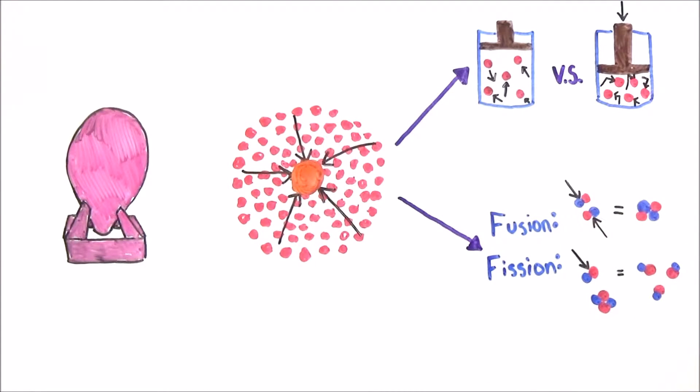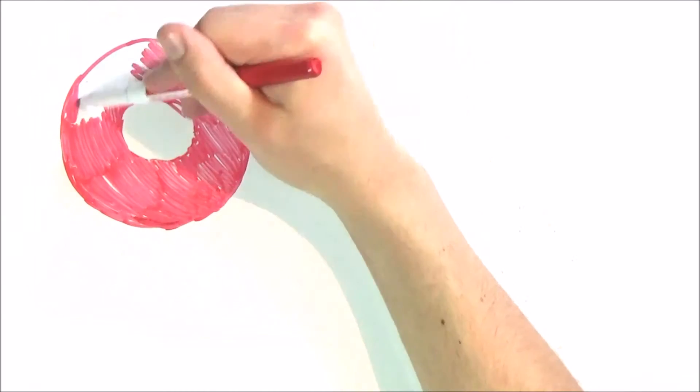By the way, fusion in stars is thought to be the way we got all the other elements. Both fission and fusion take place when the heat of the star's core is enough to make the hydrogen atoms slam into each other hard enough.